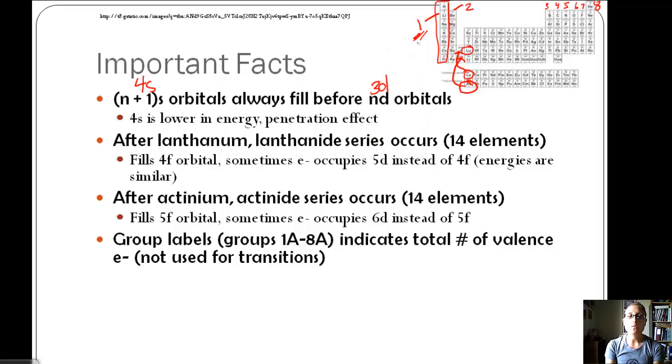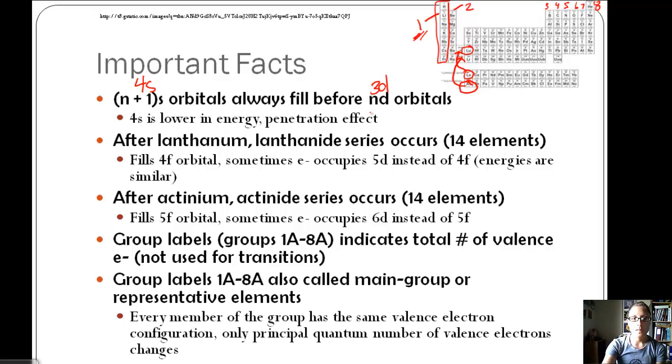You don't have to do electron configuration to figure it out every time. These group labels are also called main group or representative elements. Every member of the group has the same valence electron configuration, and only the principal quantum number of those valence electrons changes. Where with hydrogen you've got 1s1, and then lithium ends in 2s1, 3s1, 4s1. So we're increasing energy, but same number of valence electrons.